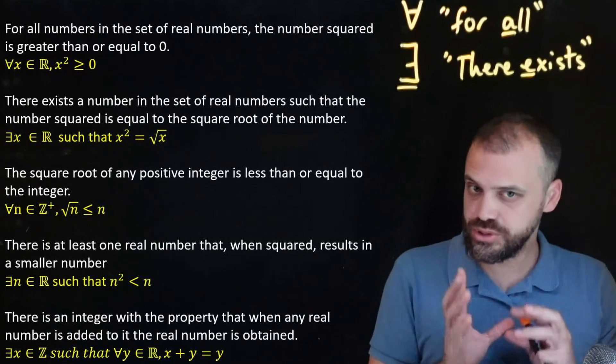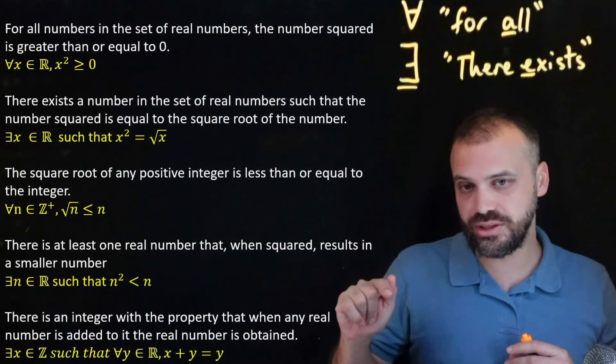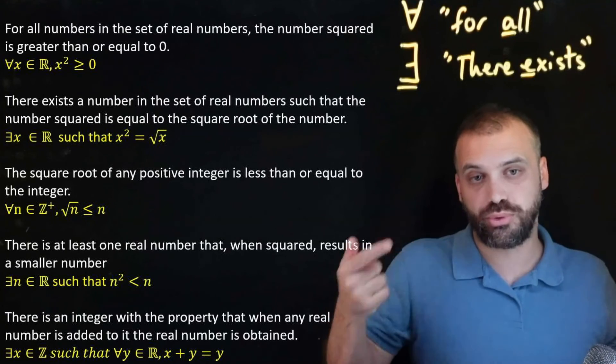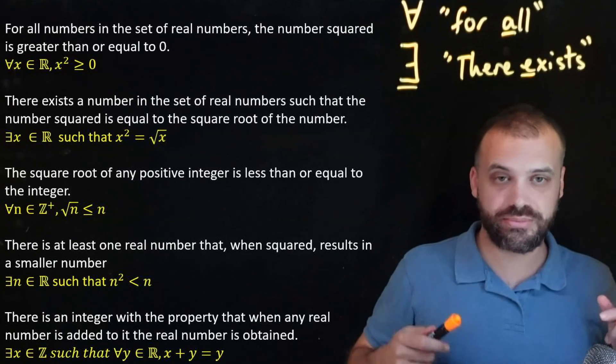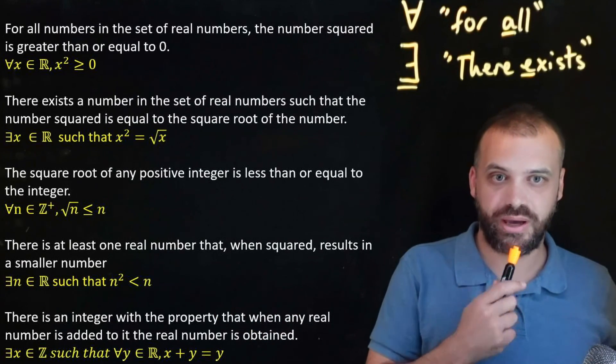Like I said, the most important thing to me is that you can look at the yellow writing and interpret what it's saying. That's what we're trying to do here. Two new symbols and a new way of writing mathematical sentences.